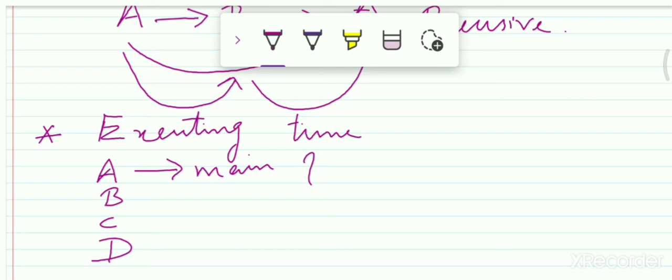But how are they connected to each other? They are connected to each other by the parameters, by the parameter list. One provides the input to the other through the parameter list. They communicate to each other only through the parameters.